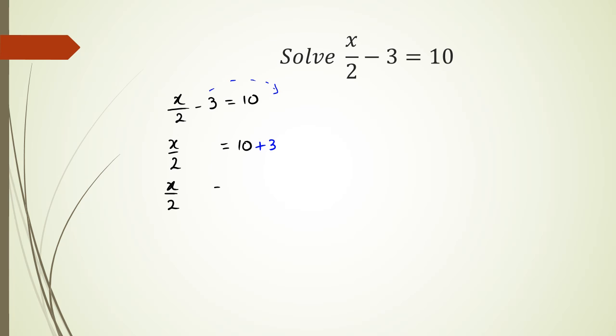So, x over 2 equals 13. And, of course, now, I want to get rid of the 2. And because 2 is being divided on this side, when it's shifted to the right-hand side, it would be multiplied by 2. And therefore, x is equal to 26.